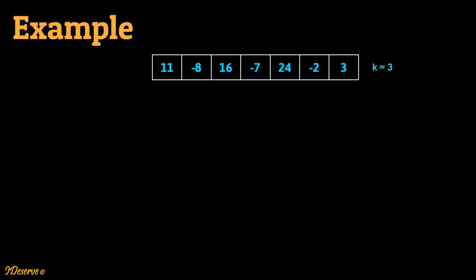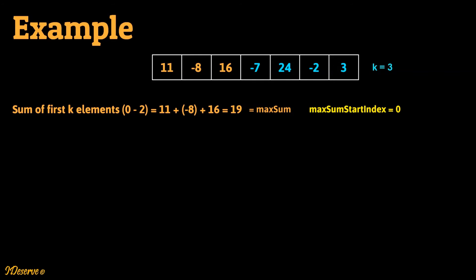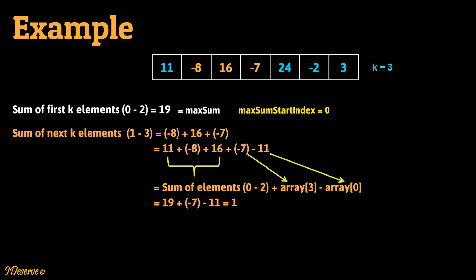We will understand and visualize the algorithm through an example. Consider the following array; here k is 3. Let us calculate the sum of the first k elements, which is from index 0 to 2. The sum is 11 + (-8) + 16 = 19. We initialize max sum to 19 and max sum start index to 0. Now the sum of the next k elements from index 1 to 3 is -8 + 16 + (-7), which can also be calculated as the sum from index 0 to 2, plus element at index 3, minus element at index 0.